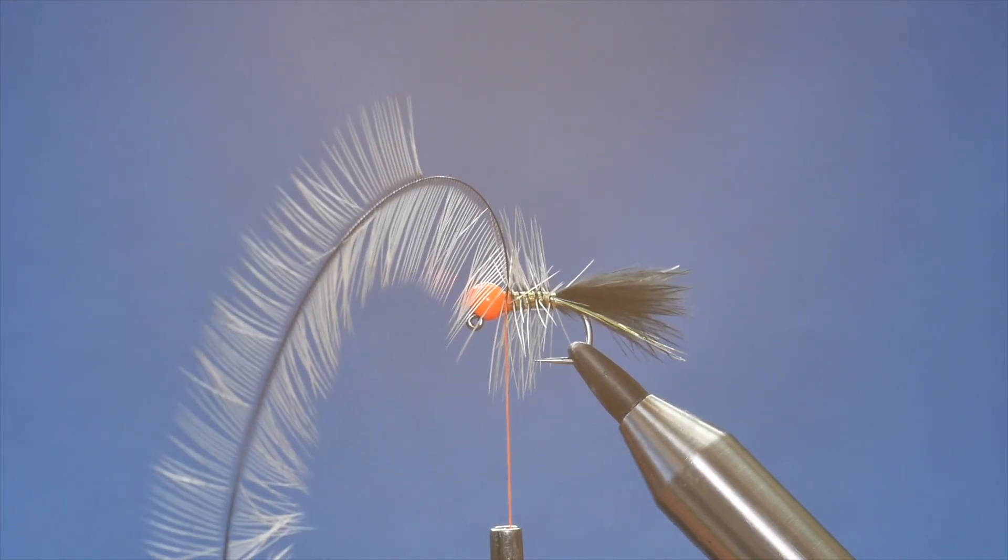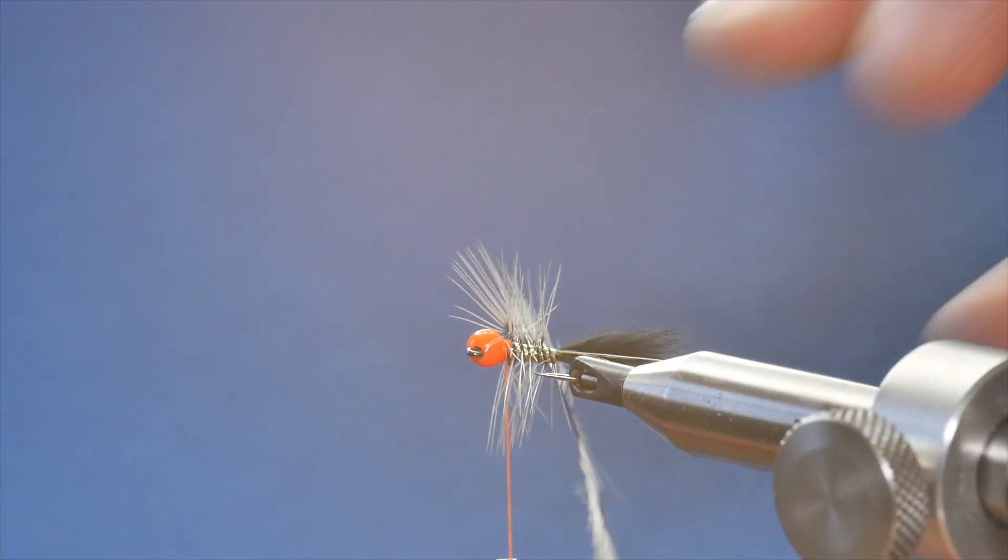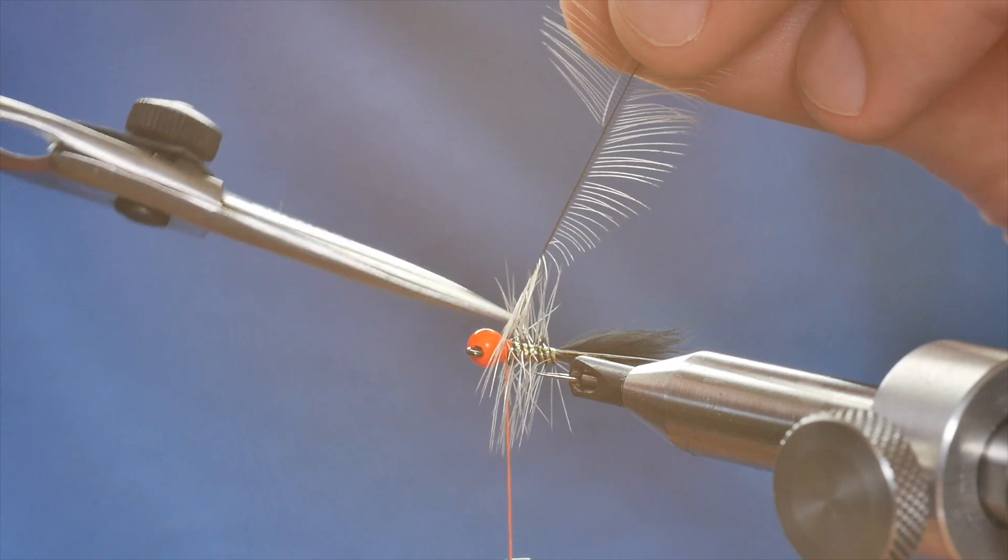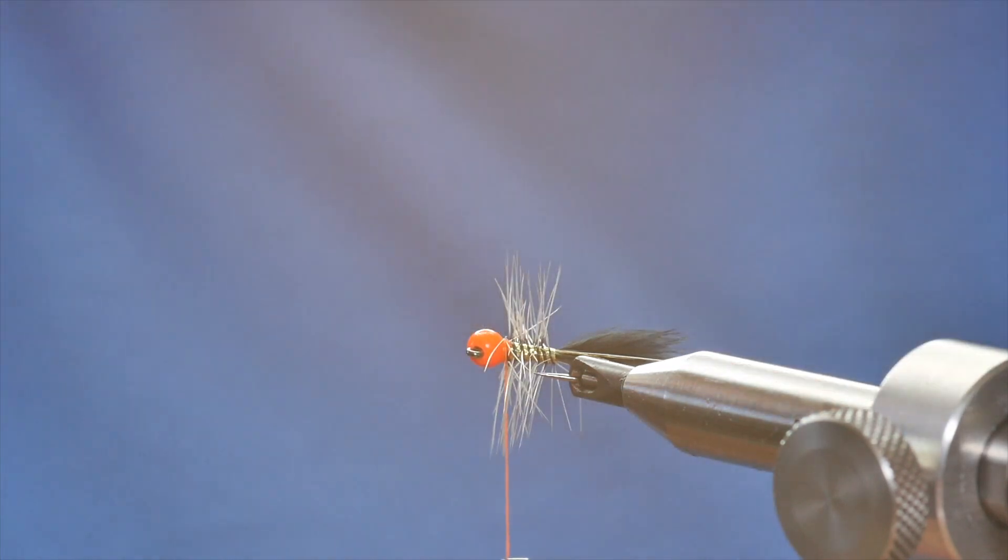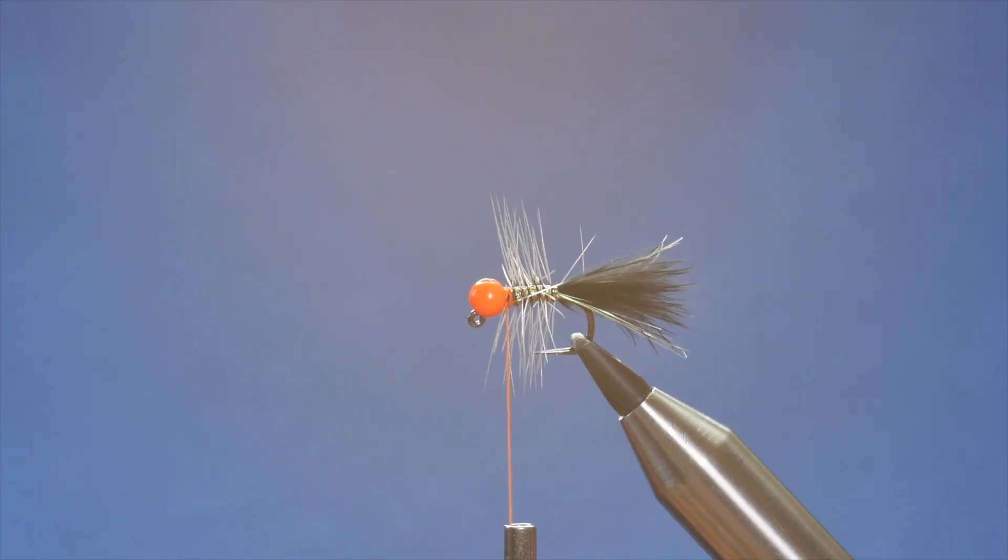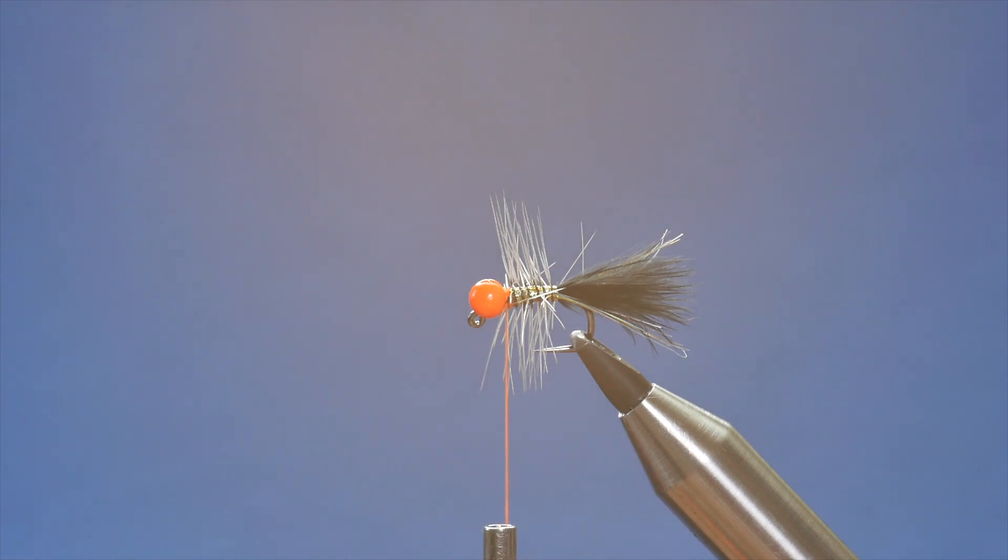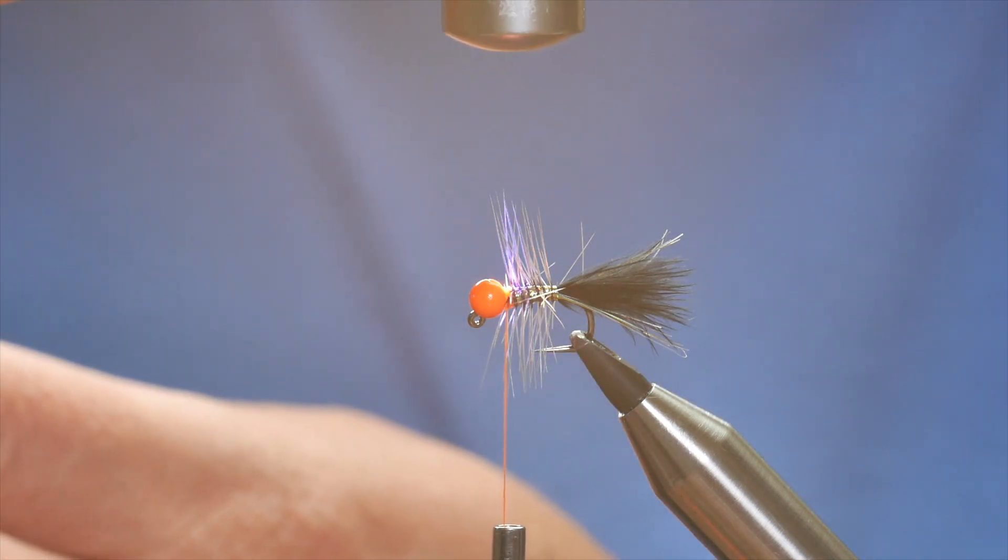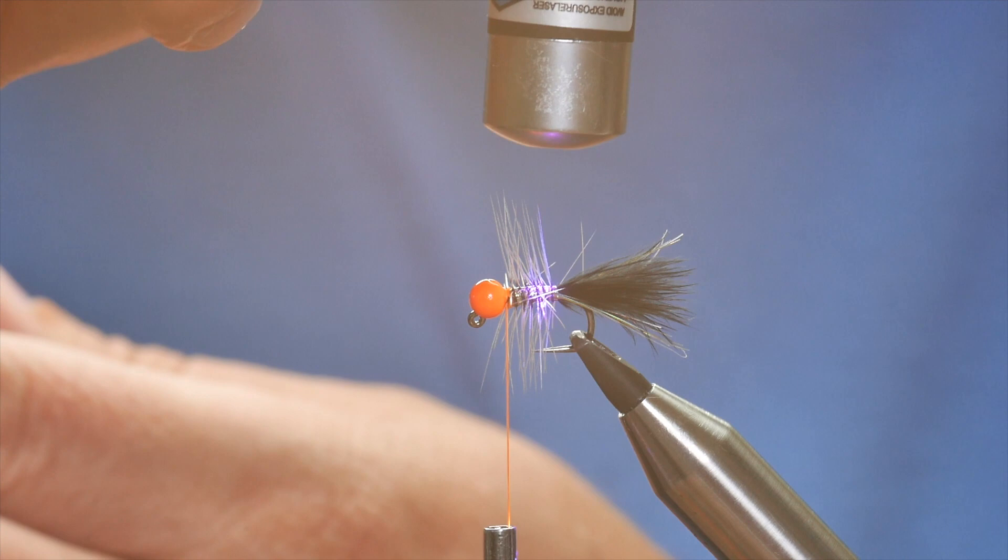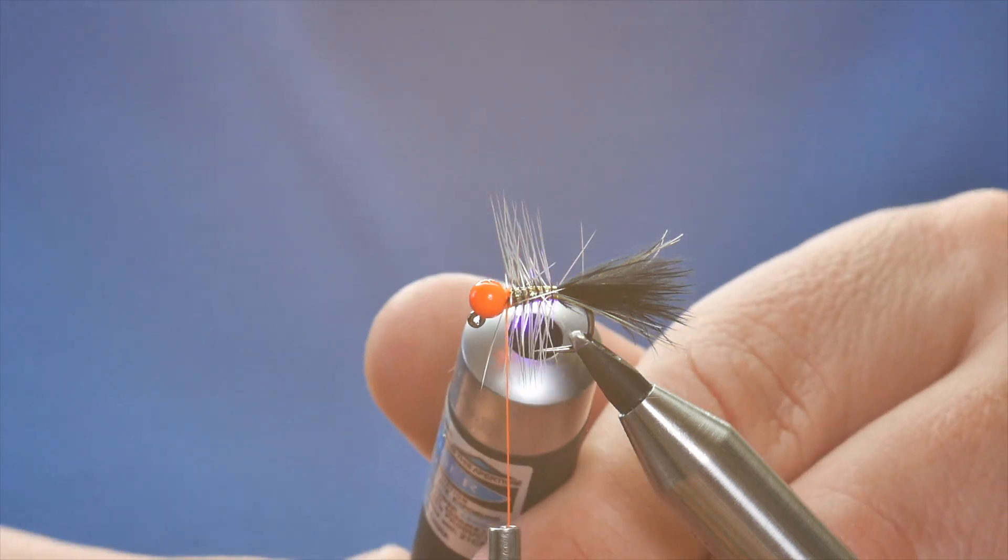Now, I'm just going to turn my vise so that I can remove the waste here. Then, before I do anything else, I've got to cure my resin. So I'm just going to come in with my torch. And what this does, it locks that palmer into place without the use or need of a wire rib.